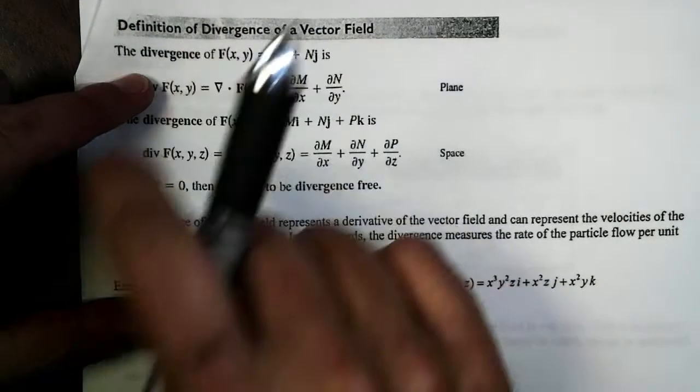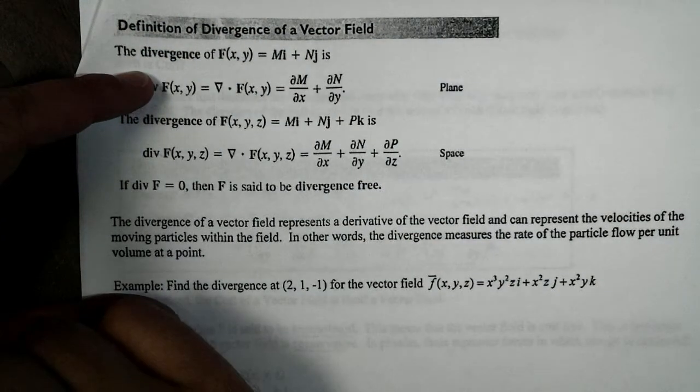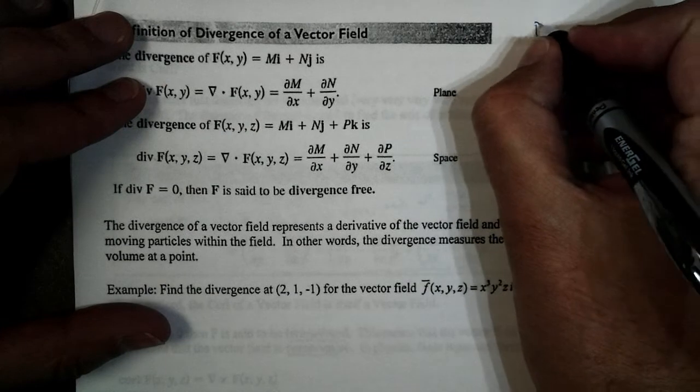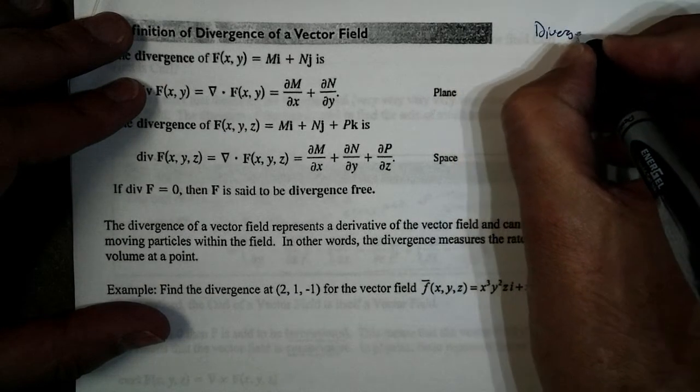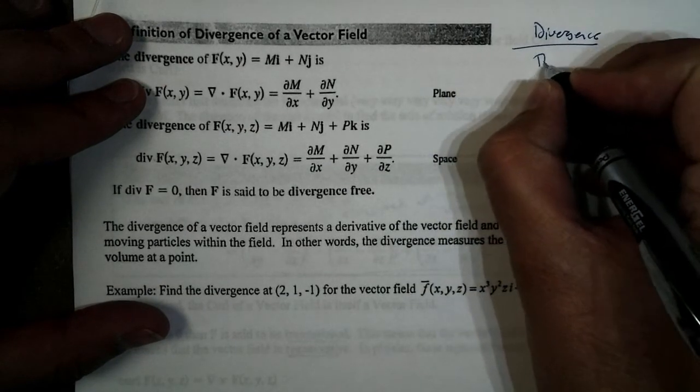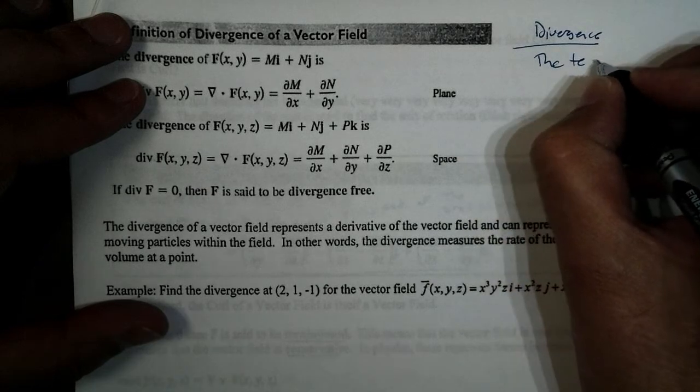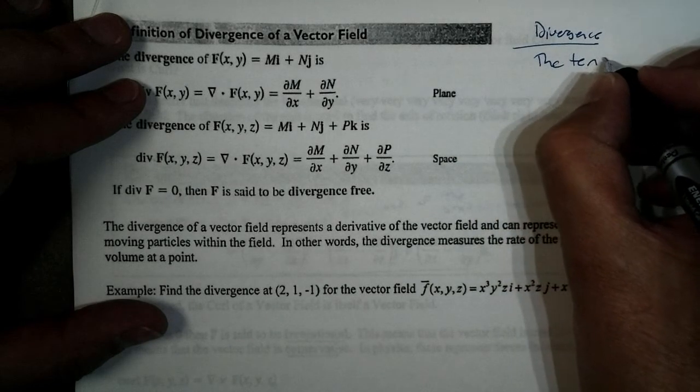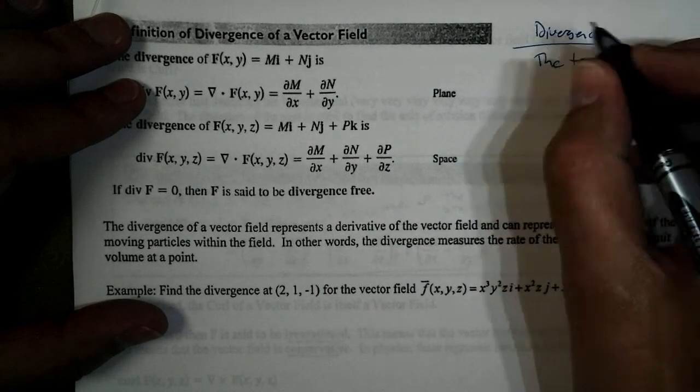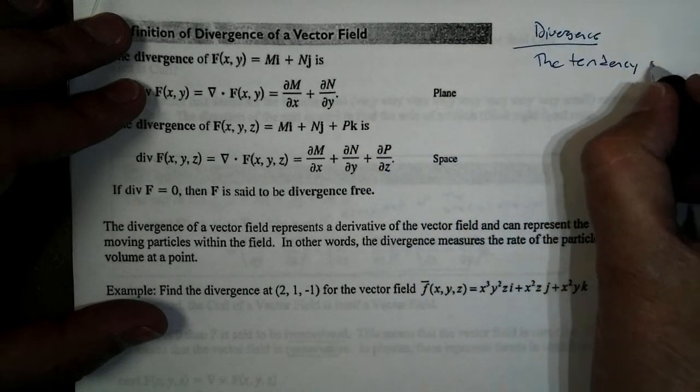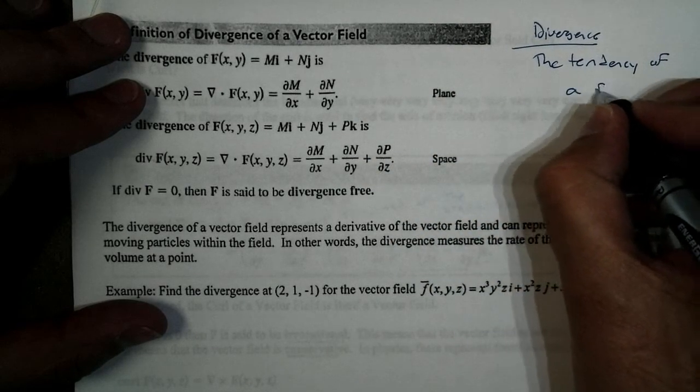And today, in this video, we're going to talk about what's called divergence. Now, divergence of a vector field is the tendency of the vector field to move. It's the tendency, so think of it being a vector field like a fluid, the tendency of a fluid to move.